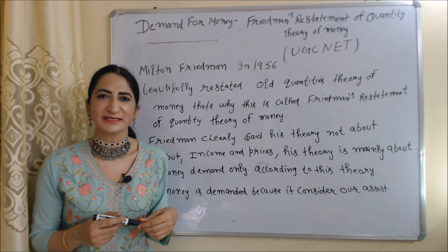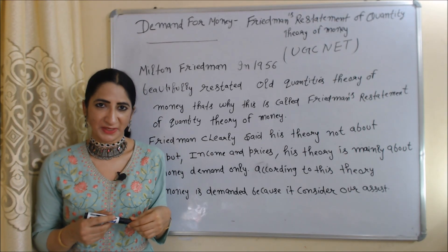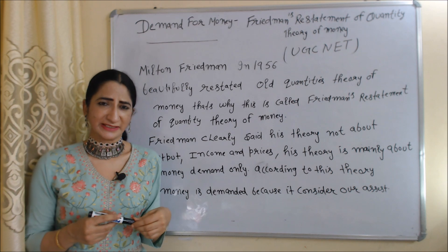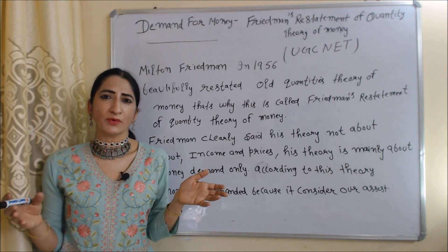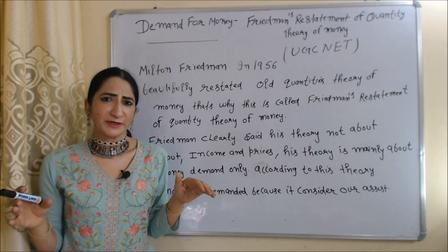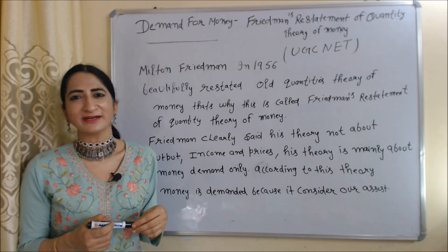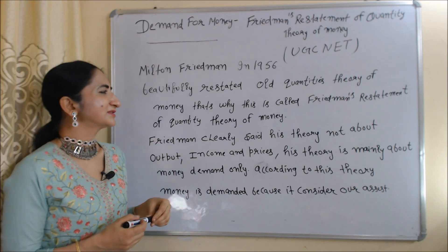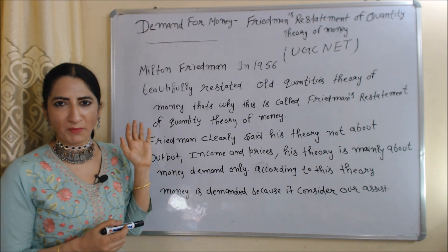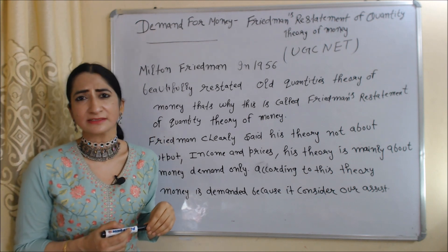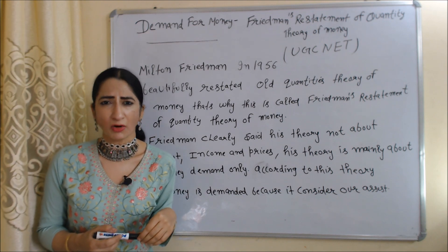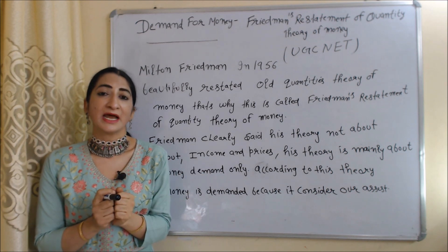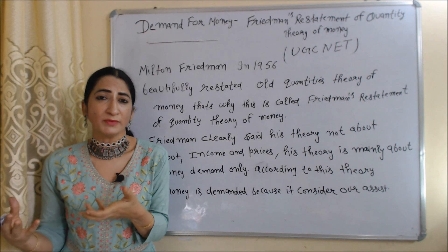Hello everyone, my name is Mini Sati. I hope you all are staying healthy. Today we are going to talk about one more theory of money demand for UGC NET. The name of this theory is Friedman's Restatement of Quantity Theory of Money. Milton Friedman in 1956 beautifully restated old quantity theories of money. One thing Milton Friedman clearly said: this theory is not about income, output, or prices.